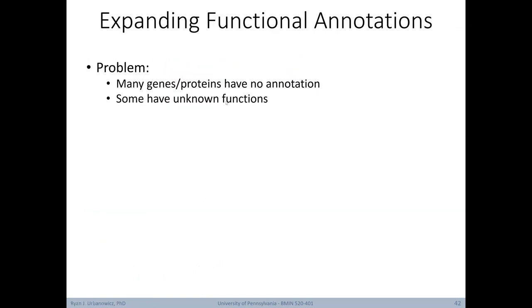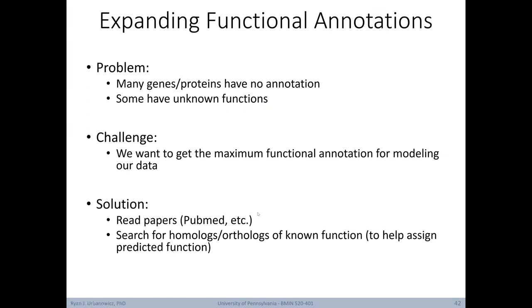Ultimately, we want our functional annotations to be as accurate and comprehensive as possible. However, many genes and proteins don't have annotations to begin with. And for some, we don't even know their functions. So how do we achieve maximal functional annotation? Well, for one, we can read scientific research papers, basically manually looking for associations between genes, gene products, and functional terms from the ontology. However, this can be extremely time consuming. Another way is to take a more automated approach. Specifically, we can search for homologs or orthologs of known function to help assign predicted function.